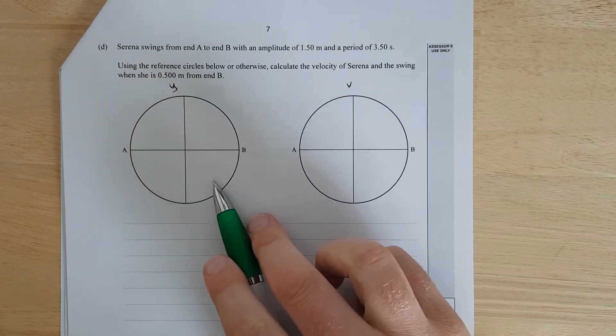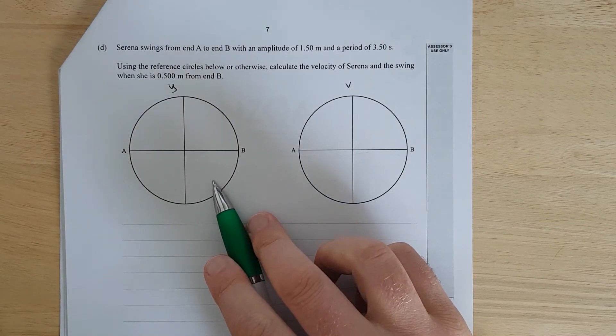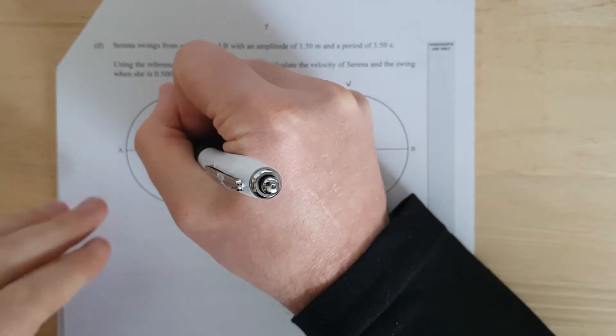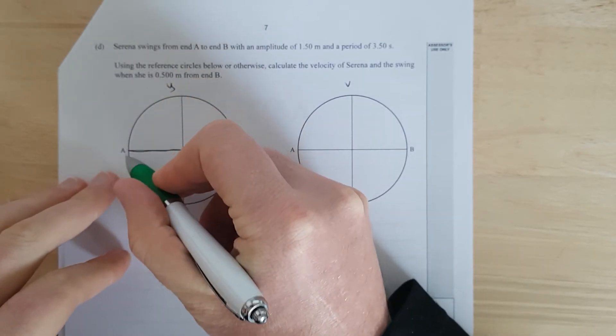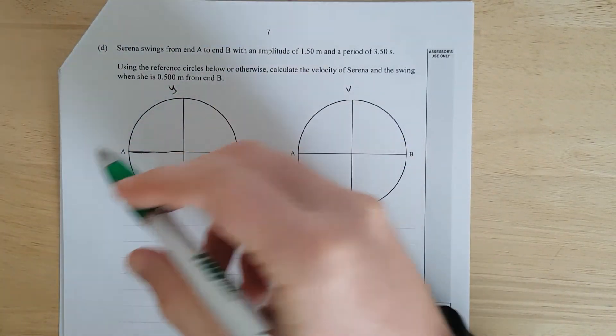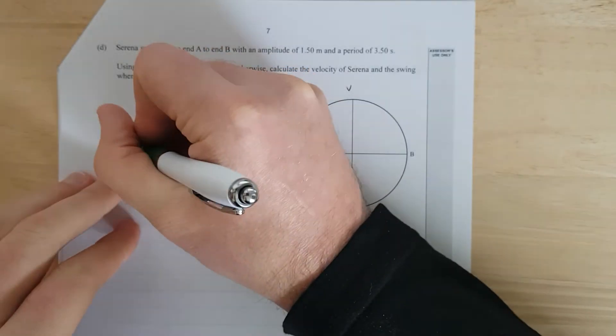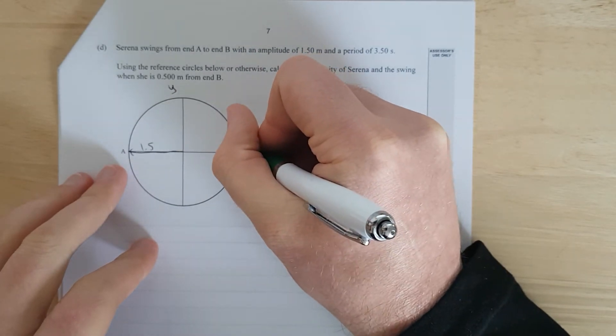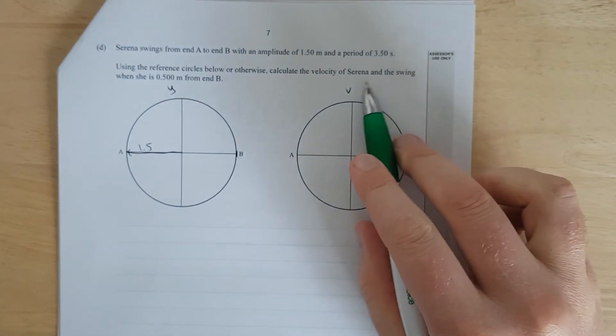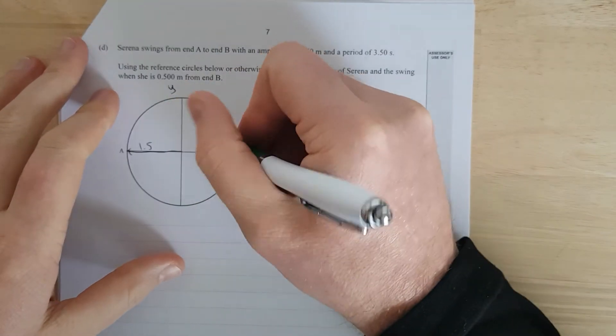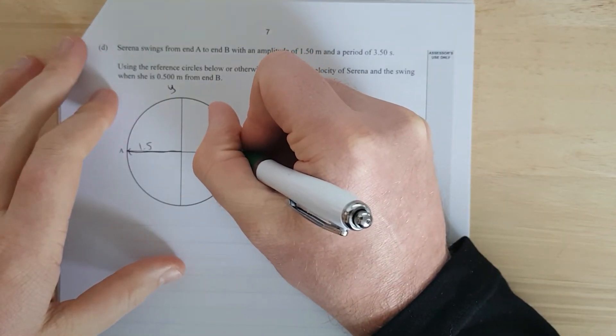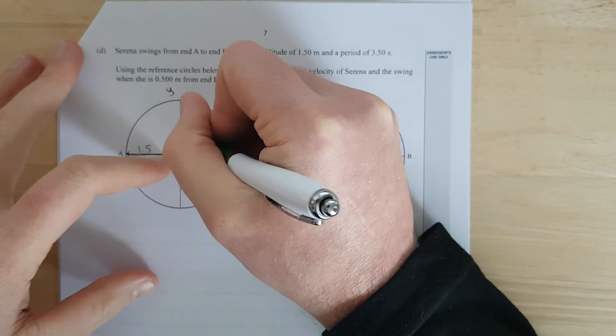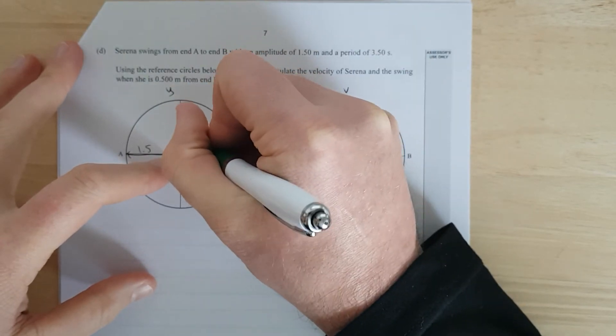It starts from A to B. It's got an amplitude of 1.5. So, from here to here. I'm going to assume it's swinging like that. Other kids do it backwards. It doesn't matter. So, 1.5. The total distance from here to here is 3. And the swing, which is half a meter from end B, she put an X there, which means half a meter from end B, which is, this is 1 meter here. 1 meter.